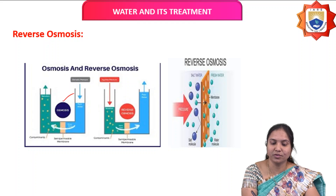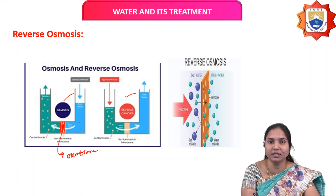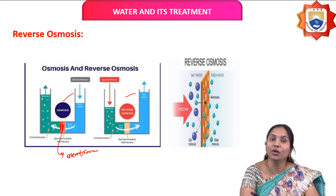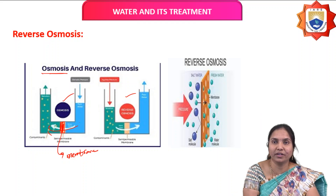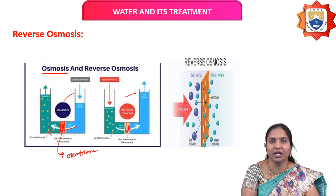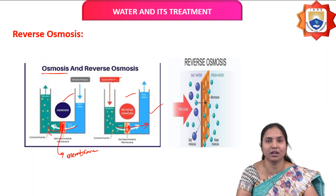Here the diagram clearly shows osmosis and reverse osmosis. In osmosis, two different concentration solutions are separated by a semipermeable membrane — made of cellulose acetate or cellulose butyrate — and when osmotic pressure is applied on the low-concentration side, solvent flows from low to high concentration. In reverse osmosis, pressure is applied at the high-concentration side, and solvent flows from high to low concentration, converting sea water to drinking water.